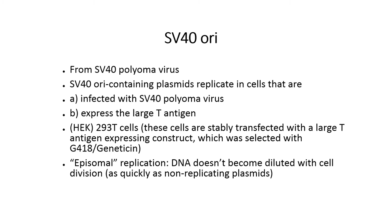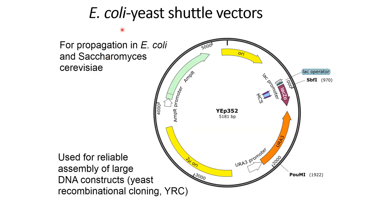Another example for an E. coli-yeast shuttle vector is YEp352, which is about 5,181 base pairs. It consists of an origin of replication site for E. coli as well as another origin of replication — the 2-micron origin — for Saccharomyces cerevisiae. It consists of a lac promoter, a URA3 promoter, and along with the lac promoter there is a multiple cloning site.